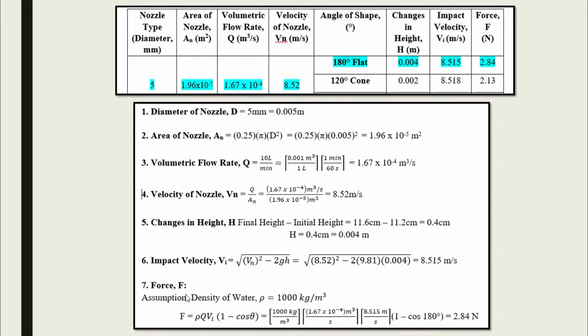In this experiment, the fluid we use in the impact of jet is water. So we use the density of water, 1000 kg per meter cubed. Then we can use this formula to find the value of force.